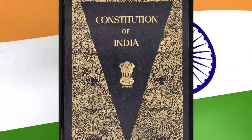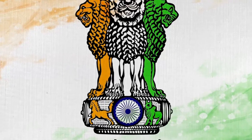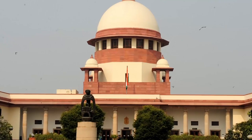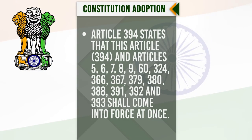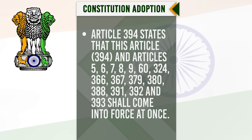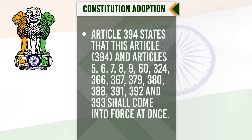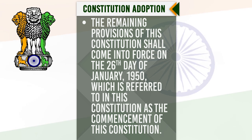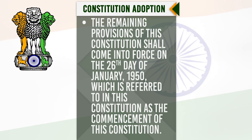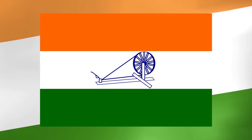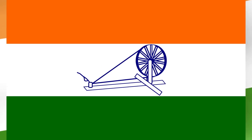The date of adoption of the Constitution is 26 November 1949, but most of its articles came into force on 26 January 1950. The articles which came into existence on 26 November 1949 are specified by Article 394. Article 394 states that this article and Articles 5, 6, 7, 8, 9, 60, 324, 366, 367, 379, 380, 388, 391, 392 and 393 shall come into force at once, and the remaining provisions shall come into force on 26 January 1950, referred to as the commencement of the Constitution. The 26th of January was selected because it was on this day in 1930 that the Declaration of Indian Independence, Purna Swaraj, was proclaimed by the Indian National Congress.